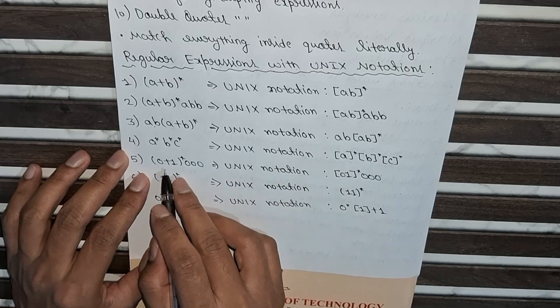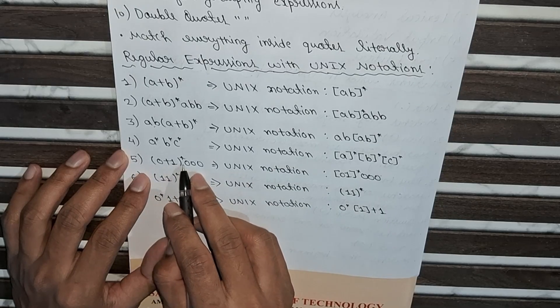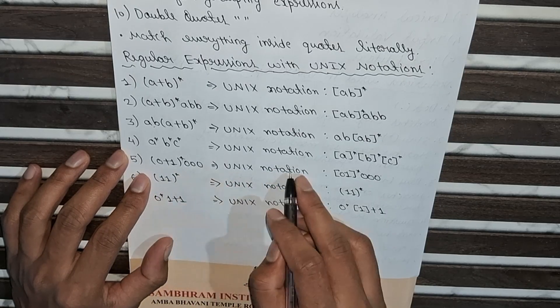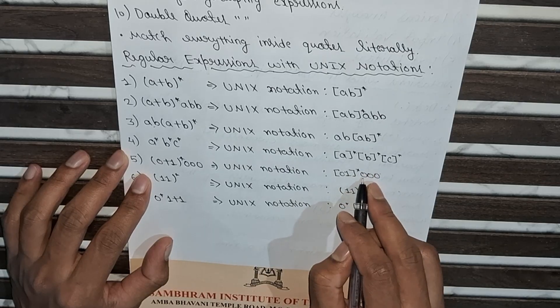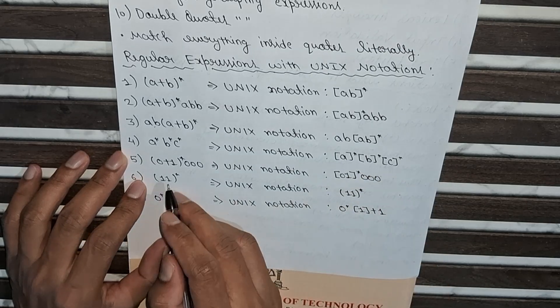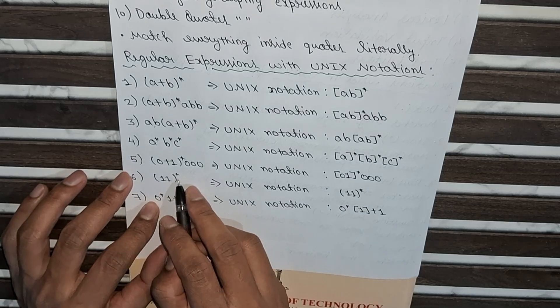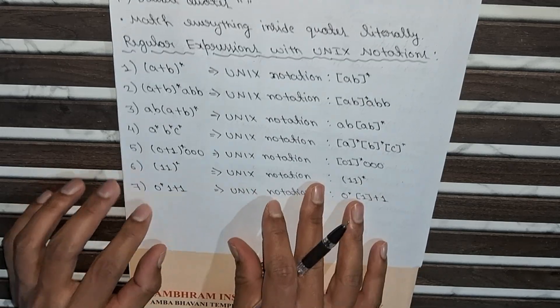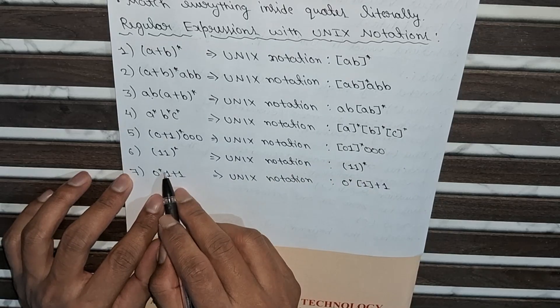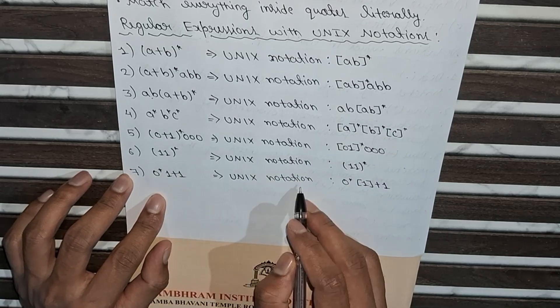In fifth one, (0+1)* 0000, in Unix notation we will write [01]* and then zero zero zero. And in sixth one, (11)* we will write in Unix notation as it is.